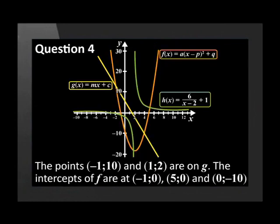Sketched are the graphs of f(x) is equal to a(x minus p) to the power of x plus q, g(x) equals mx plus c, and h(x) equals 6 over (x minus 2) plus 1.